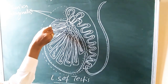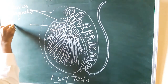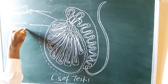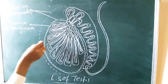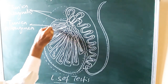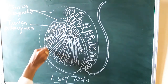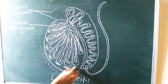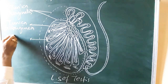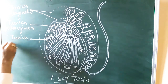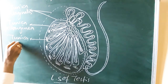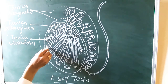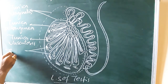Tunica vaginalis — this one is tunica albuginea. Below this there is a vascular tissue; you can just put lines over this so you can understand the vascular layer. This is tunica vasculosa.